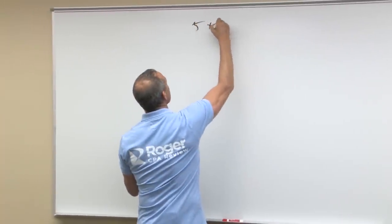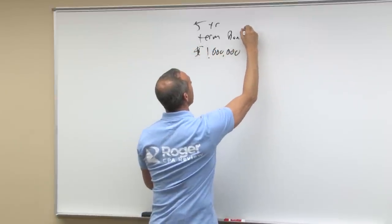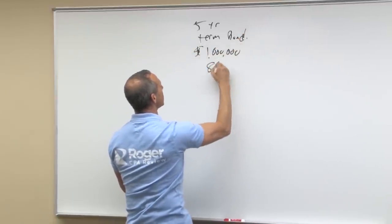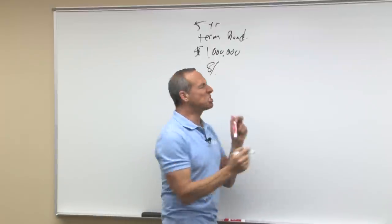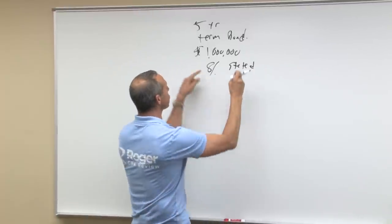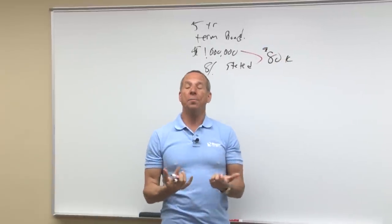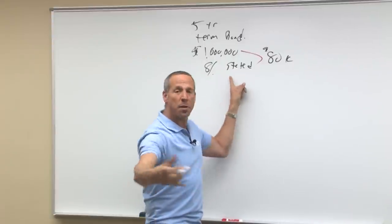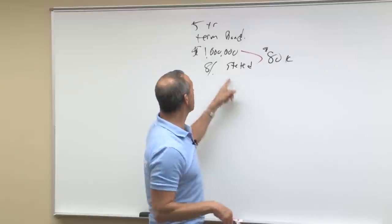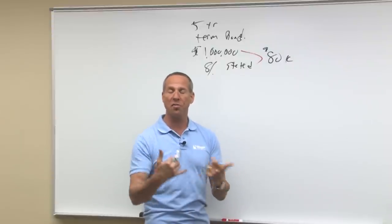For example, we have a five-year term bond, one million dollars, and let's say the interest rate is eight percent. That is called the stated rate. The stated rate means that's how much they're going to pay me — eight percent of a million dollars, or $80,000 a year. So I'm saying: I'm going to loan you a million dollars, you're going to pay me eight percent, $80,000 a year, for the next five years. The million dollars is the par value, face value, or maturity value.